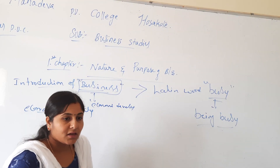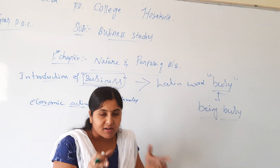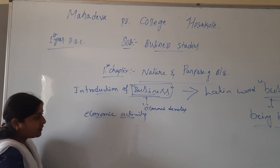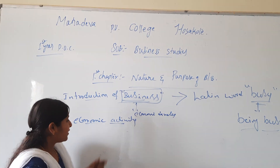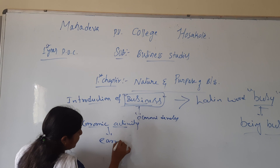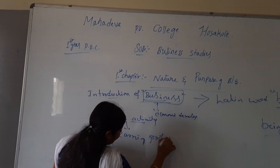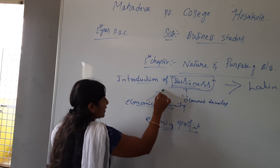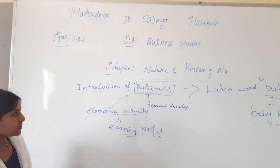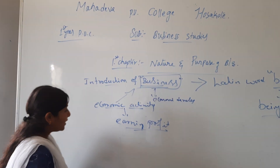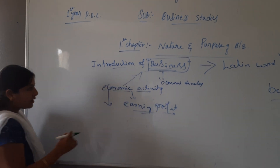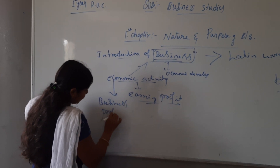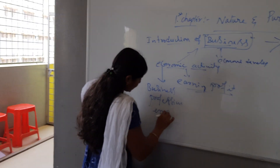Business is an economic activity where a person engages for the purpose of earning profit. The profit motive is the basis of business. Economic activities are classified into three types: one is Business, second is Profession, and third is Employment.